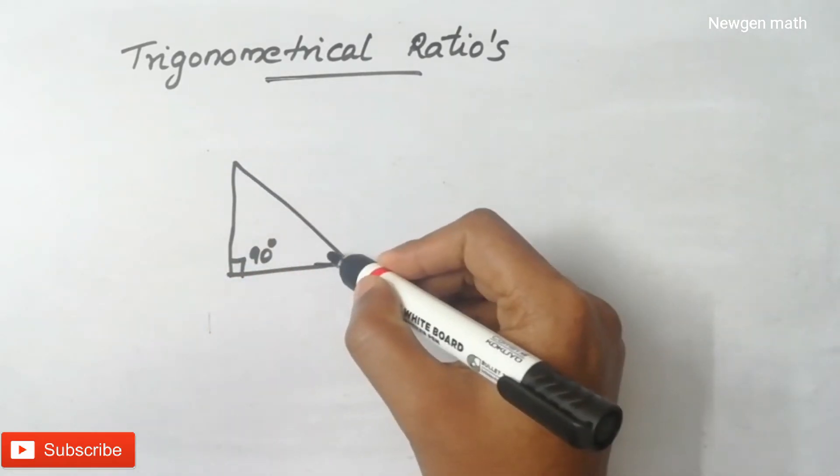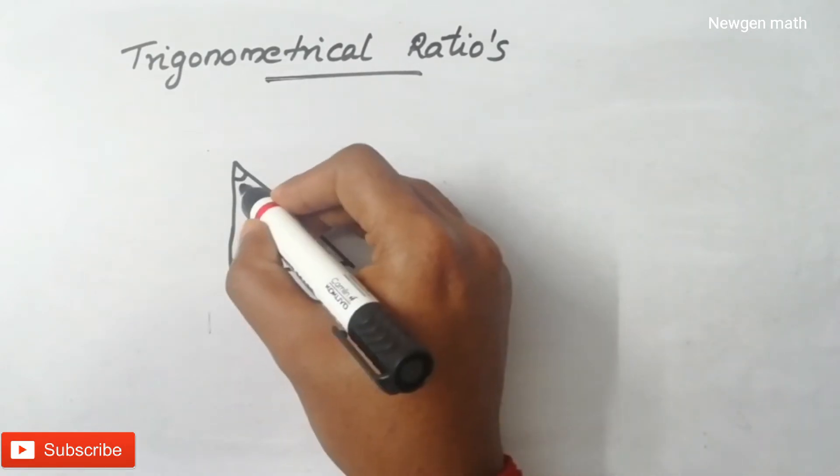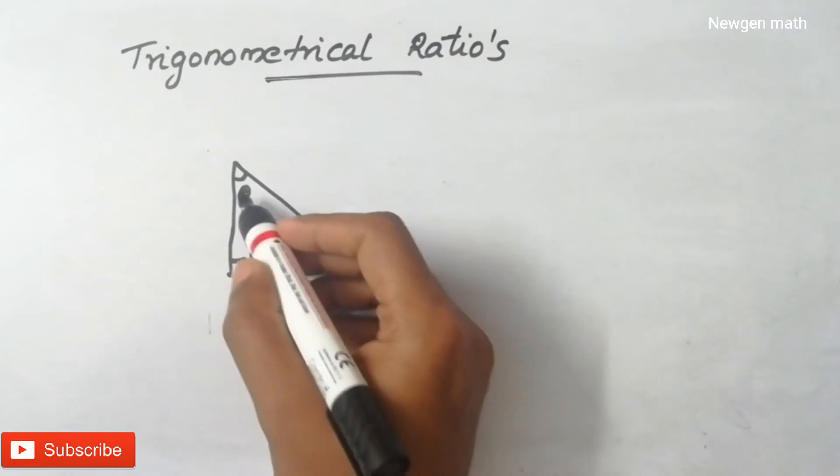We are not going to use this angle. We are going to use this angle theta. We have 90 minus theta. The angle is theta. We can use this angle theta.